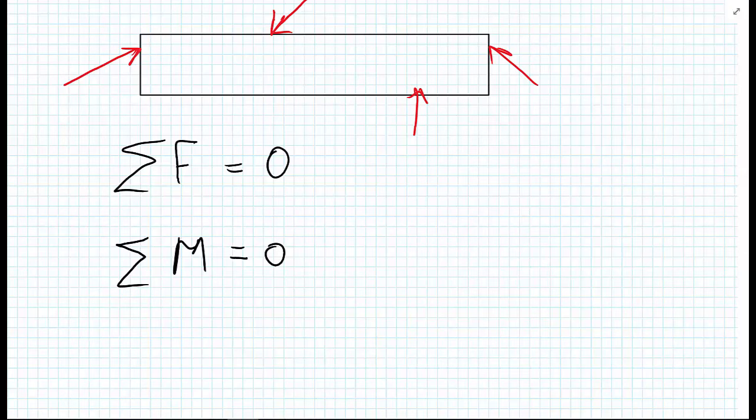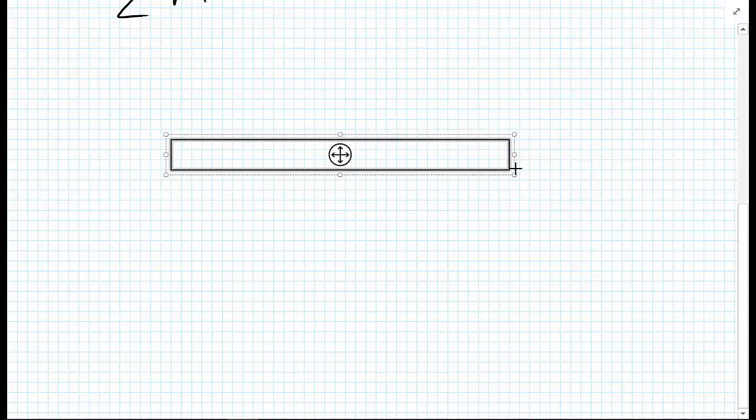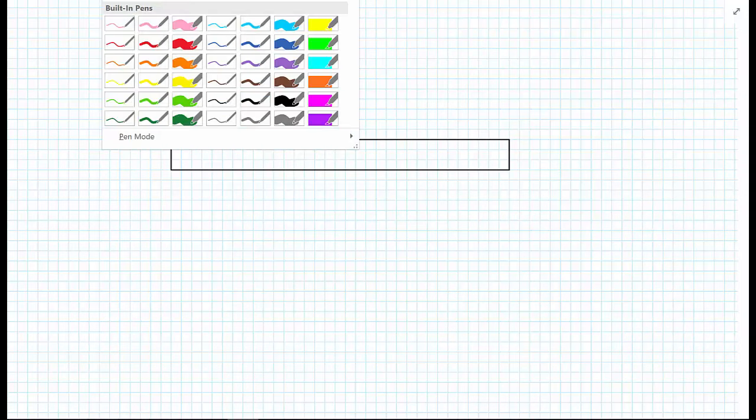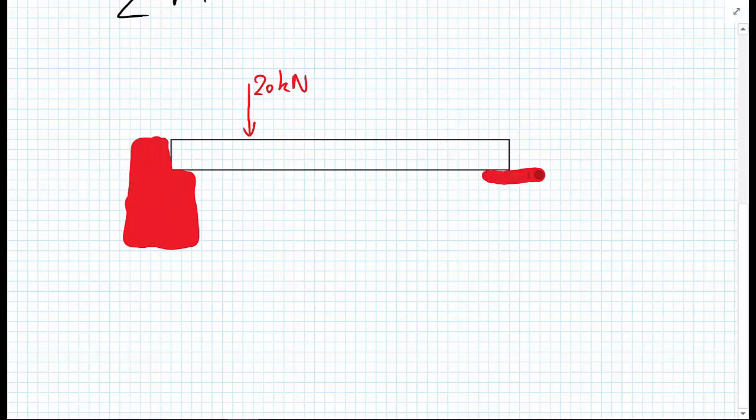Okay, so we're going to move on to an example. The example we're going with is, we have a floor slab of some kind, and this floor slab is subject to a force of 20 kilonewtons. This floor slab as well, we're going to say that this is supported, maybe it's supported on a masonry wall at the left-hand end, and a masonry wall at the right-hand end.